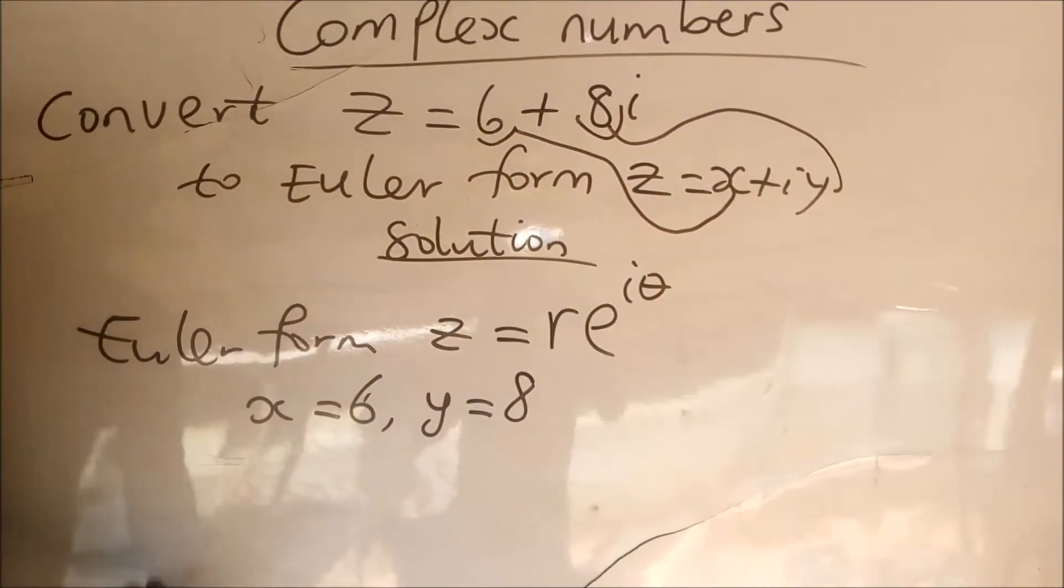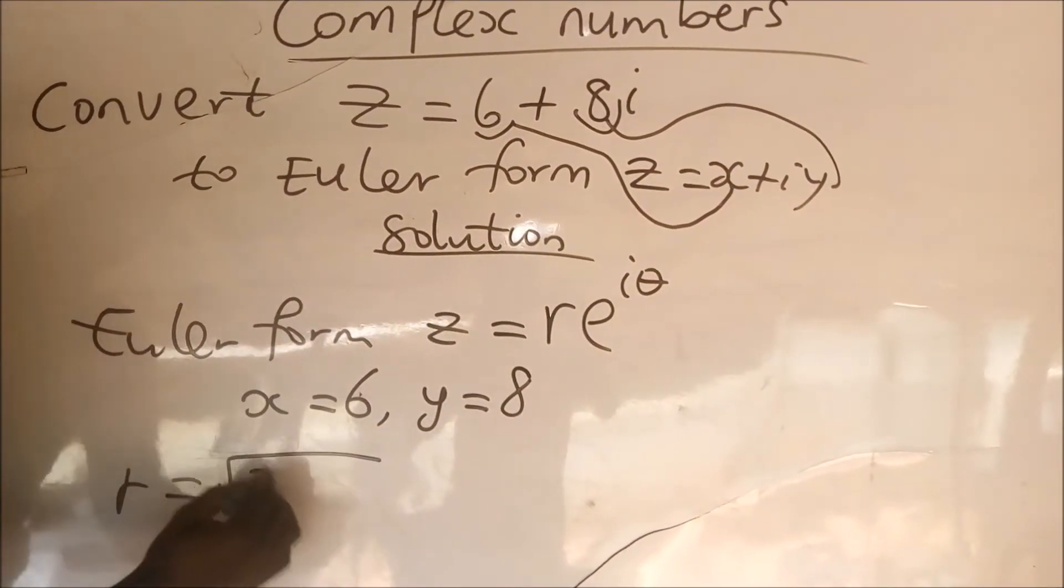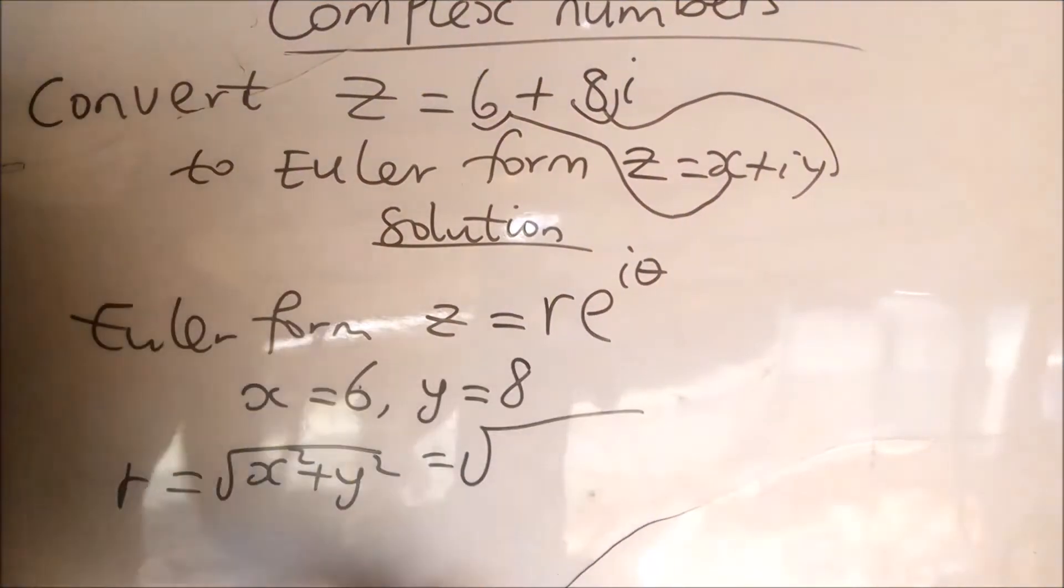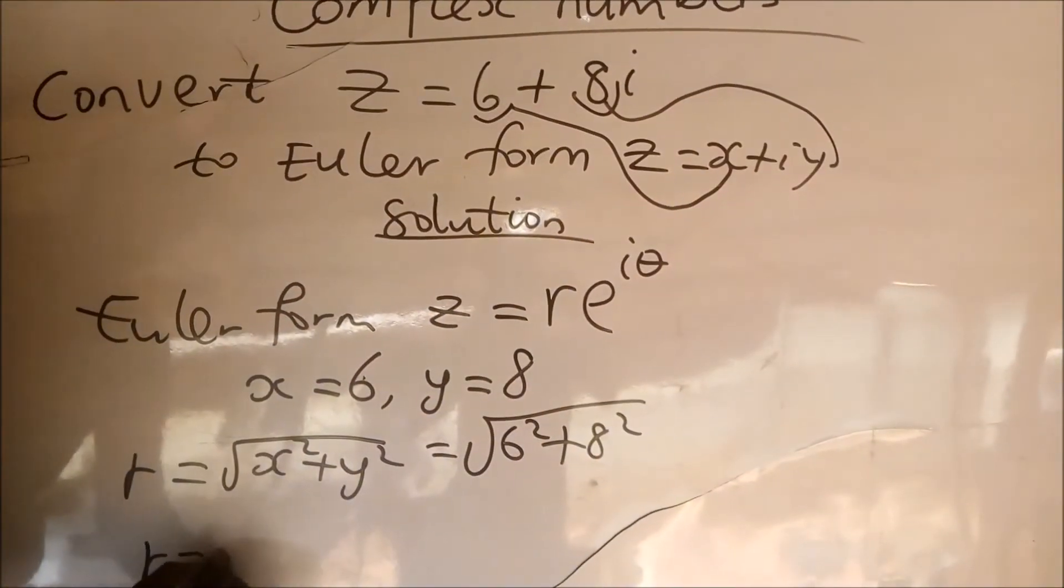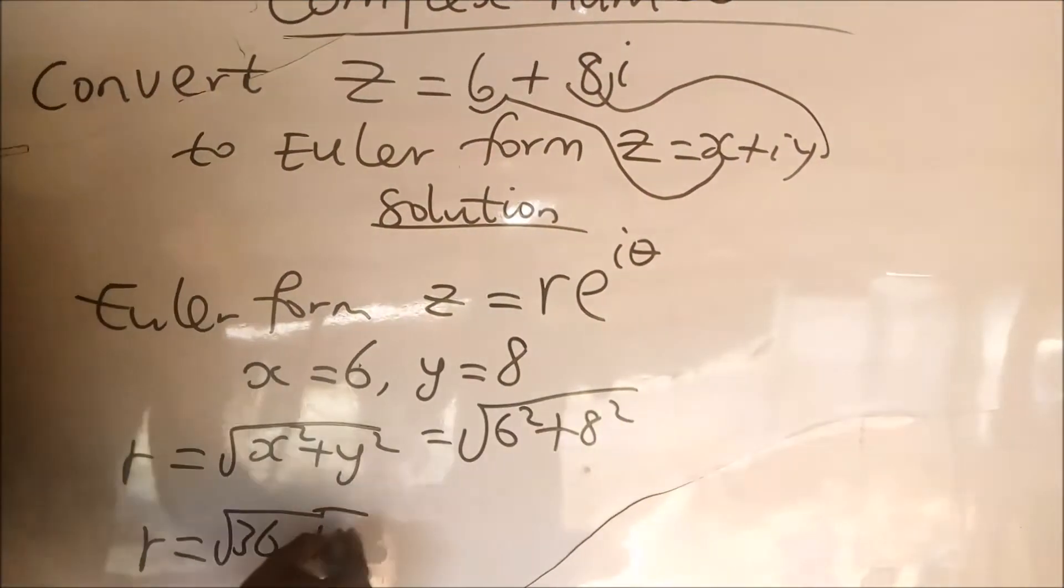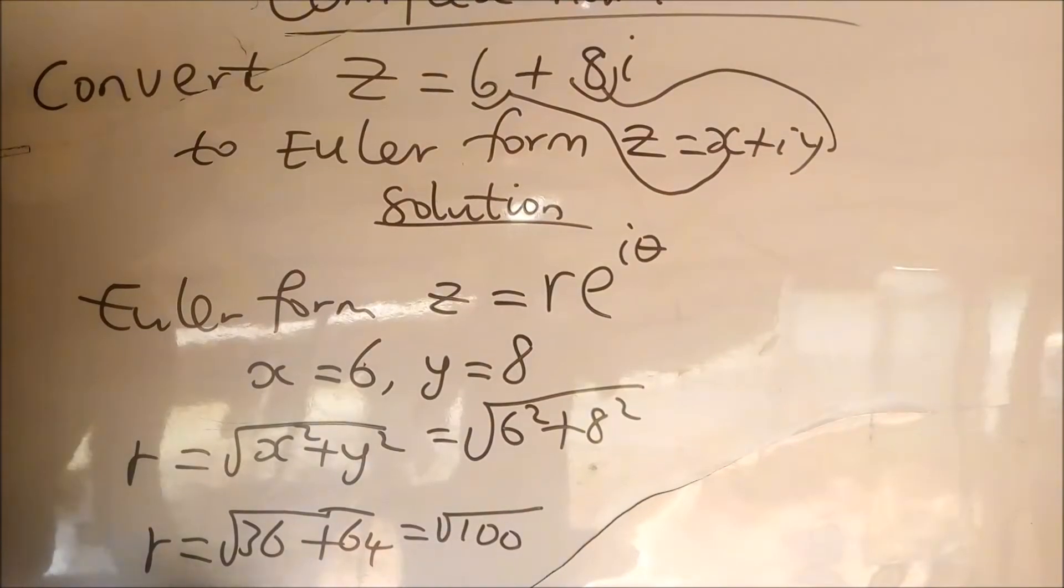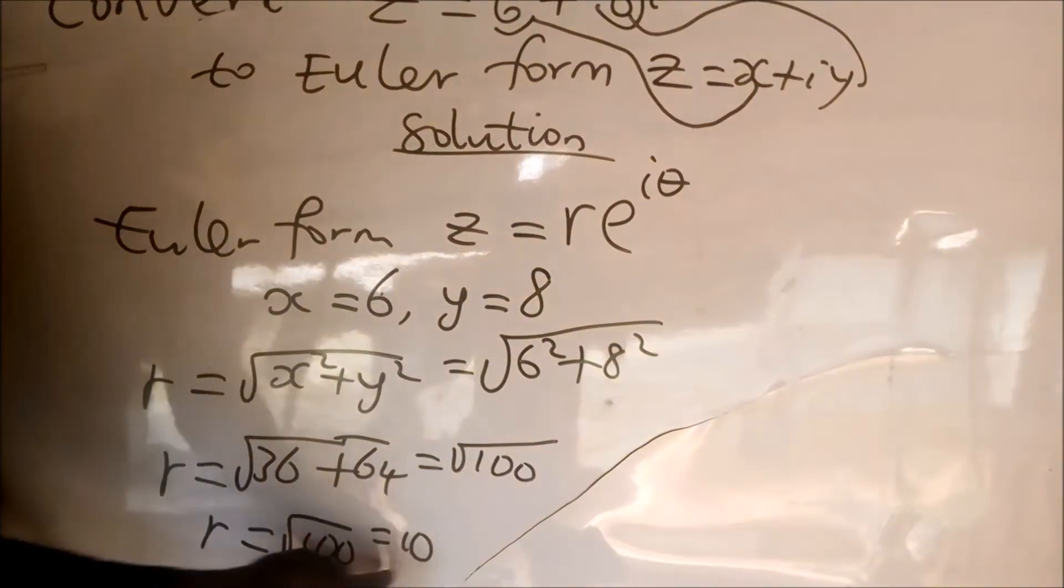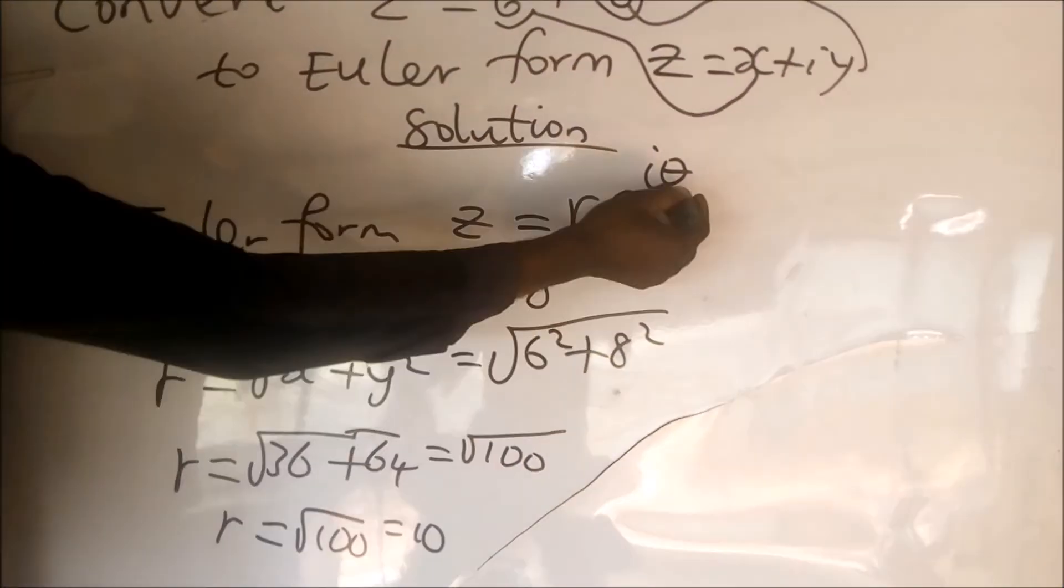Now for us to get our modulus, which is r, we use the formula r equal to square root of x squared plus y squared, which when we substitute, we are going to have 6 squared plus 8 squared. Our r is going to be square of 6 is 36 and square of 8 is 64, which when added together we have 100, and the square root of 100 is equal to 10. So 10 is the modulus of this complex number.